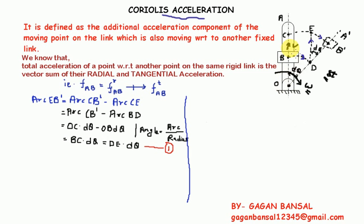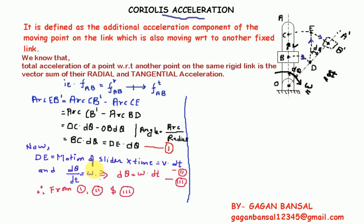So OC minus OB from the figure gives BC, and BC equals DE. This DE is the displacement at time delta t when the speed is v. So DE equals v times delta t. Also, the rate of change of angular displacement is angular velocity, that is d theta by dt equals omega, so d theta equals omega times dt.